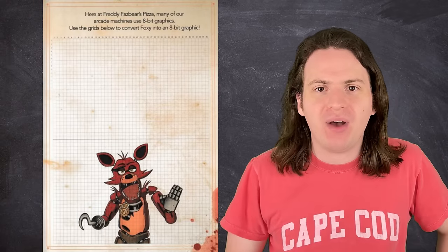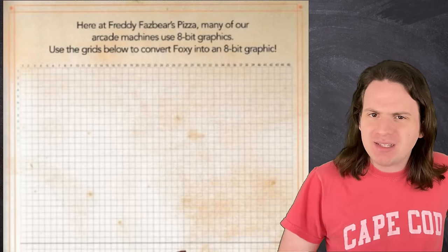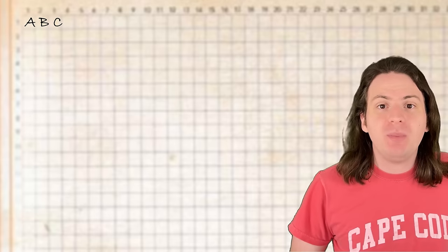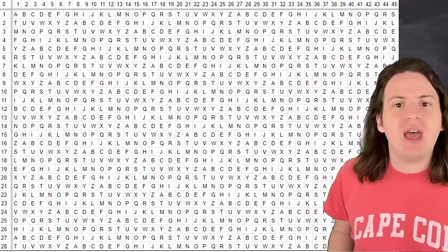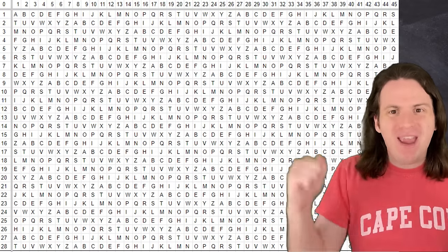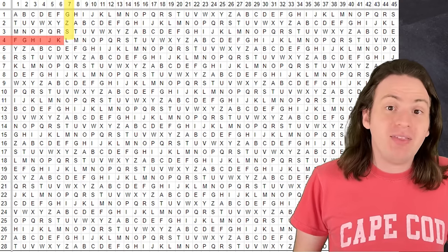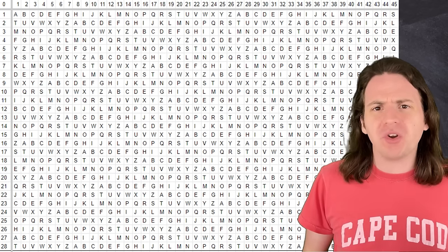On page 95, there is a grid with numbered rows and columns, and you're asked to draw an 8-bit version of Foxy. Seems innocent enough, but if you squint a little bit, you'll notice a very faint A, B, C written in the first three boxes. The logical step would be to continue the alphabet from there, and if you do that, then you get a grid of letters with numbered rows and columns. It's pretty clear that this grid is designed for you to take two numbers, find the intersection, and get a letter. The trouble is, no one knows what numbers to use.